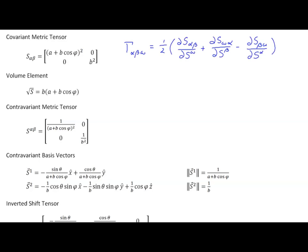Here's our formula. The first step is to find all of the non-zero partial derivatives. There's only going to be one because this is the only element that is a variable, and it's dependent only on phi, which is our second surface coordinate value. So the only non-zero value is going to be the partial of S11 with respect to S2, and for that we're going to have 2 times (a plus b cosine phi) times negative b sine phi. That is the partial derivative of S11 with respect to S2, and it's the only non-zero value.